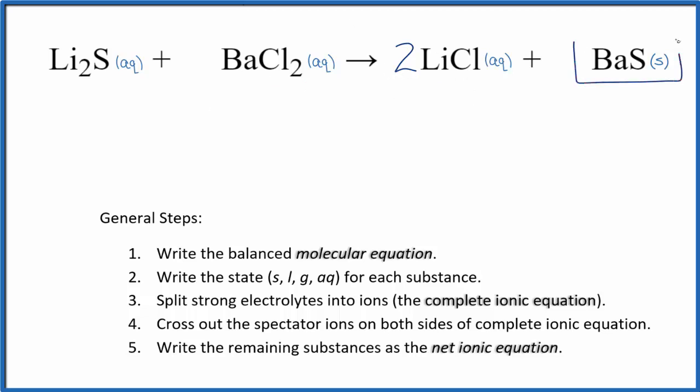But barium sulfide here, barium's in group two. We have a group two sulfide. That's going to be insoluble. So we write solid. That means it's going to be a precipitate. It's going to fall to the bottom of the test tube as a precipitate. So we won't split solids apart in net ionic equations.